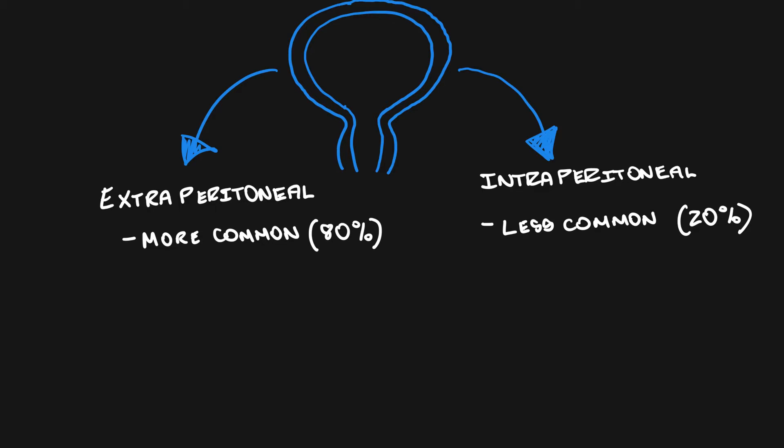Extraperitoneal ruptures are more common, around 80% of all cases, and the other 20% are made up by intraperitoneal bladder ruptures.